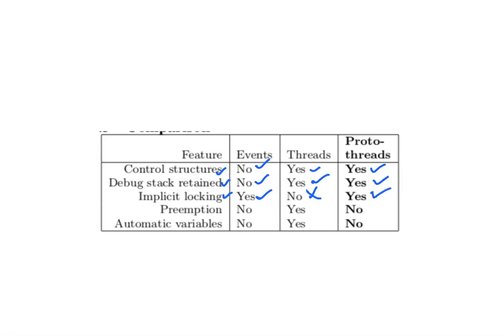Preemption - in events no, in threads yes, but proto threads there is no preemption. Because stack rewinding will be happening whenever there is a call, context switching, so no need of preemption. Automatic variables means the global variables - in events no, threads yes and proto threads also no.